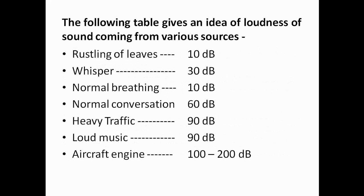The following table gives an idea of the loudness of sound from various sources: rustling of leaves — 10 decibels; whisper — 30 decibels; normal breathing — 10 decibels; normal conversation — 60 decibels; heavy traffic — 90 decibels; loud music — 90 decibels; aircraft engine — 100 to 200 decibels.